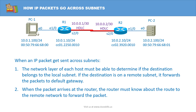Let's get started with how IP packets go across subnets by looking into this network configuration. Do you think PC1 can send IP packets to PC2? The answer is no, because both PCs need to know the default gateway information. When an IP packet gets sent across a subnet, the network layer of each host must be able to determine if the destination belongs to the local subnet. If the destination is on a remote subnet, it forwards the packet to the default gateway. When the packet arrives at the router, the router must know about the route to the remote network to forward the packet.